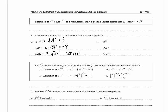In part b, we have 64 to the 1 third, which is equal to the cube root of 64, which equals 4. For negative 64 to the 1 third, the negative goes on the outside of the cube root, giving us negative the cube root of 64, which equals negative 4.